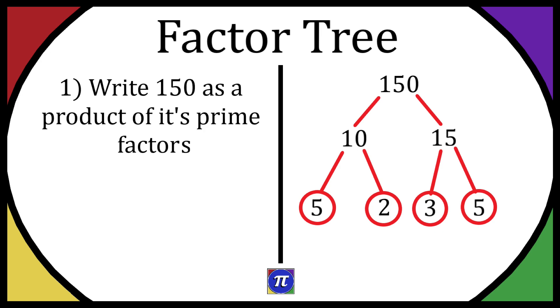So now we know we just have prime numbers, we can write 150 as 2 times 3 times 5 times 5. I've just put it in numerical order, and this can be rewritten as 2 times 3 times 5 squared.